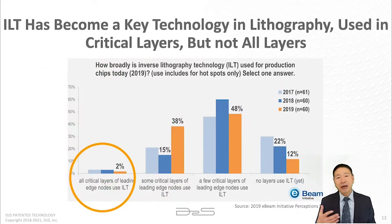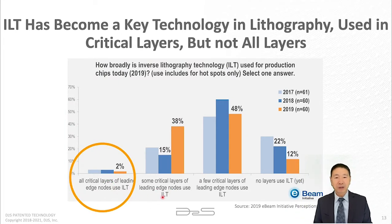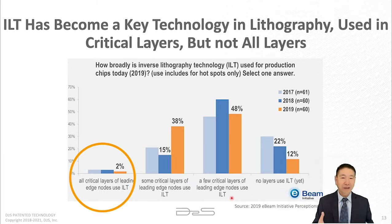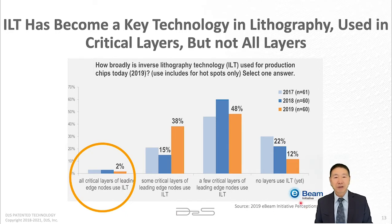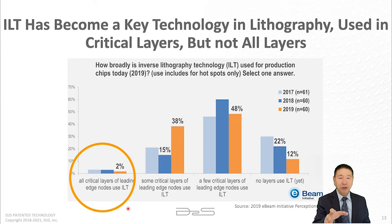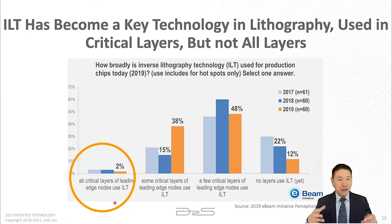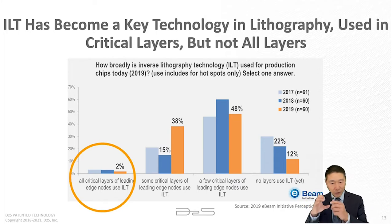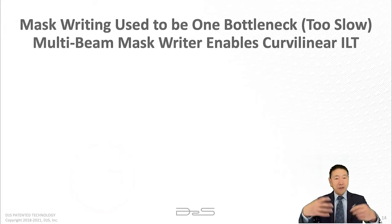Today, ILT has been used by pretty much all leading semiconductor manufacturing companies, and they all treat it as one of their core lithography technologies. According to an eBeam Initiative survey, ILT has been used in critical layers, but not in every critical layer — most usage has been in hotspots for small areas. So why not use full-chip curvilinear ILT everywhere?